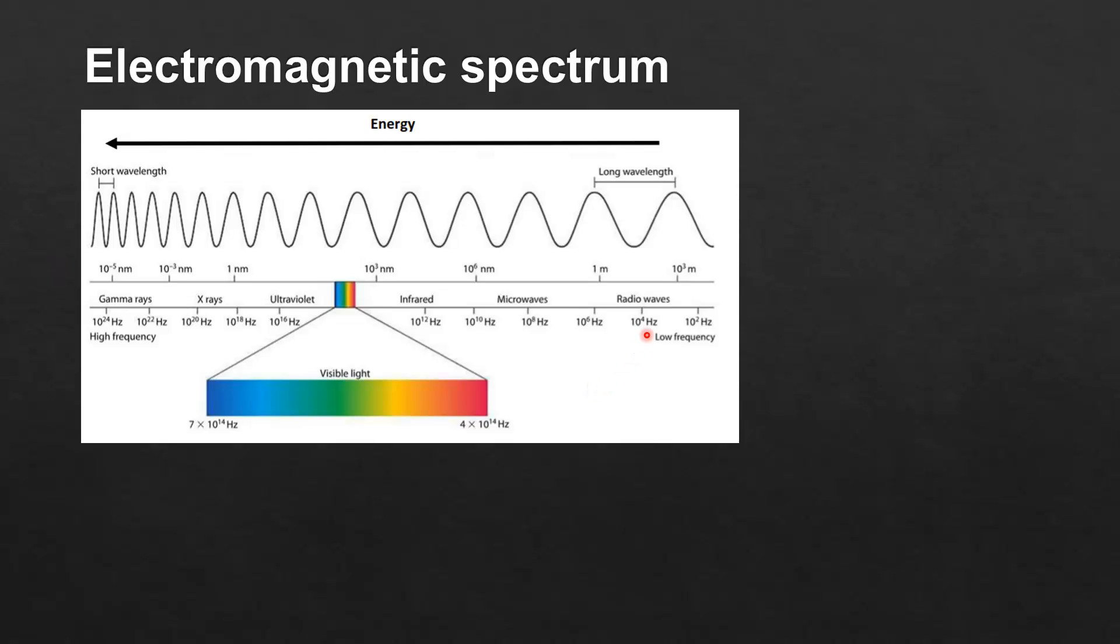If we go from right to left starting with radio waves which are low frequency, we have radio waves, microwaves, infrared, visible light, ultraviolet, x-rays and gamma rays which are high frequency.